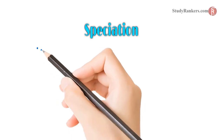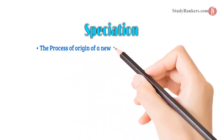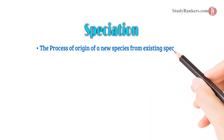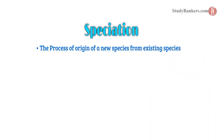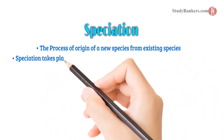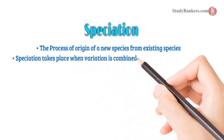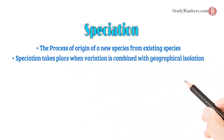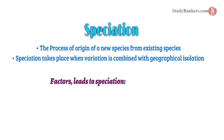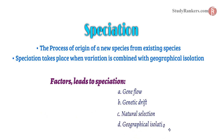The next topic is speciation. Speciation is the process of origin of a new species from an existing species. Speciation takes place when variation is combined with geographical isolation. Factors which lead to speciation are: first, gene flow; second, genetic drift; third, natural selection; and fourth, geographical isolation.